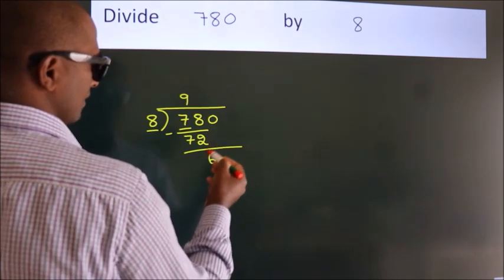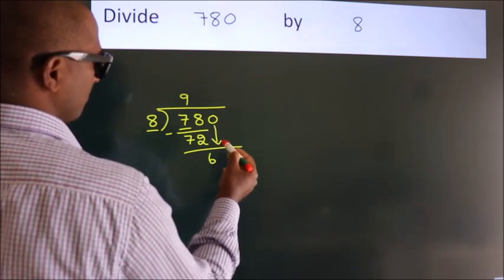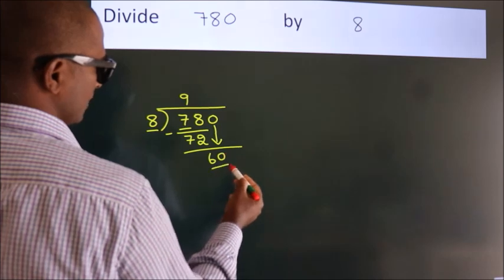After this, bring down the beside number. So, 0 down. So, 60.